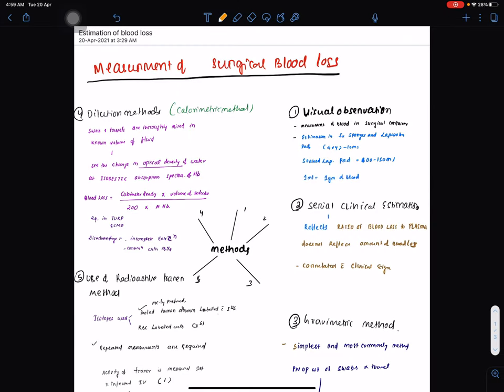I am going to discuss right now how to measure surgical blood loss. There are five methods. One is visual observation. Second is serial clinical estimation of hemoglobin. Third is gravimetric method, which is the most commonly used method. Fourth is dilution methods, and fifth is use of radioactive tracers method.